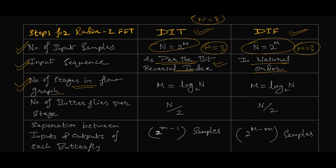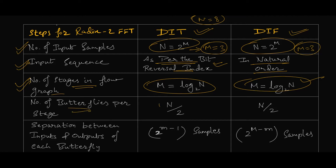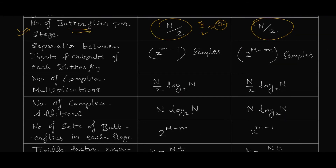The number of stages can be calculated from the standard formula M = log₂(N), and this is the same for both algorithms. Next is the number of butterflies per stage, which is N/2 for both algorithms. With N equal to 8, that gives 4 butterflies per stage, which we've already seen.